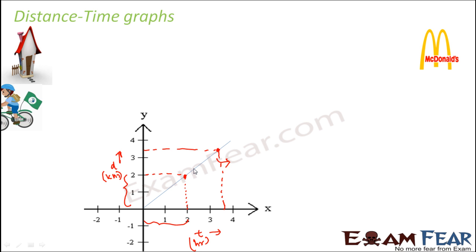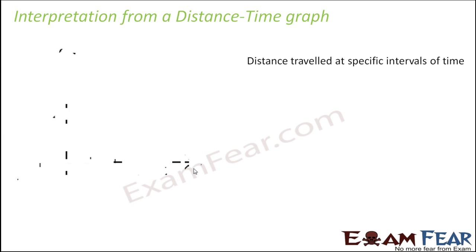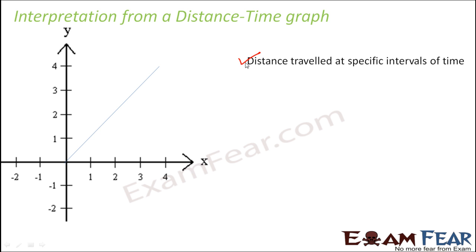Looking at the graph, you can also tell what kind of motion the object has — whether the object is moving uniformly or not. All that information can be derived from the distance-time graph. The first interpretation is the distance travelled at specific intervals of time. Any point on the graph tells you how much distance is covered at a particular instant — for example, one kilometre in one hour, two kilometres in two hours, and so on.